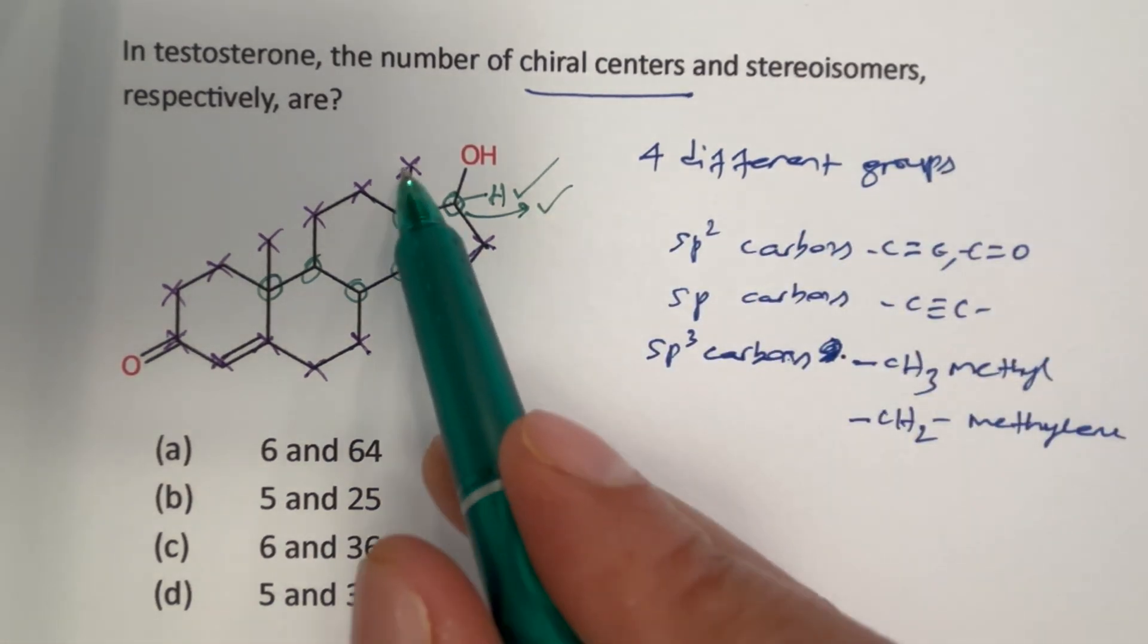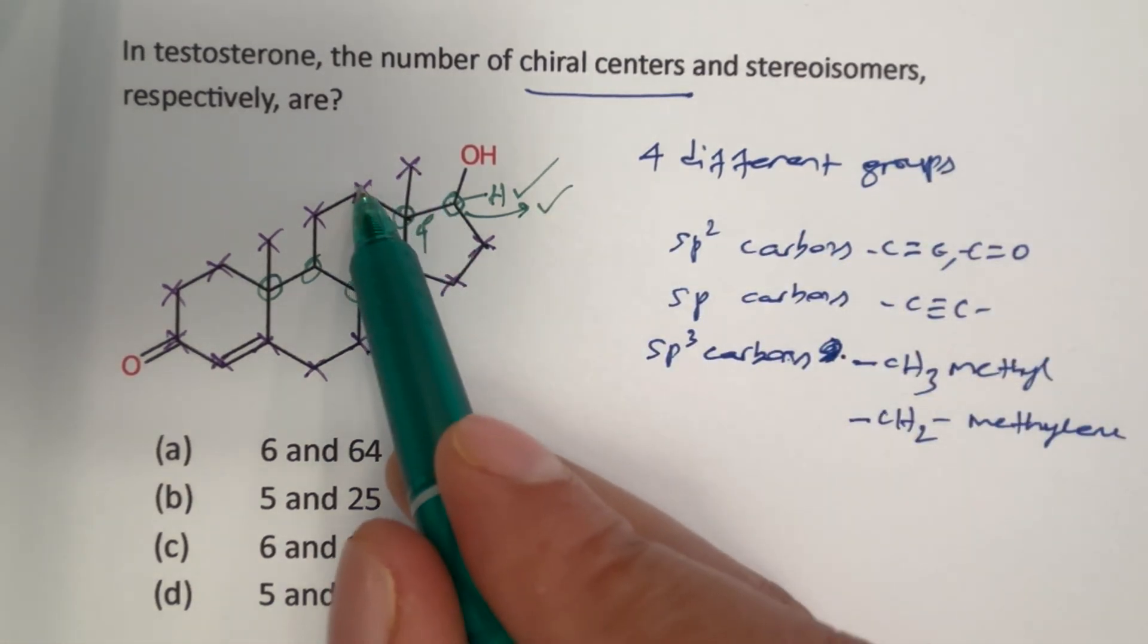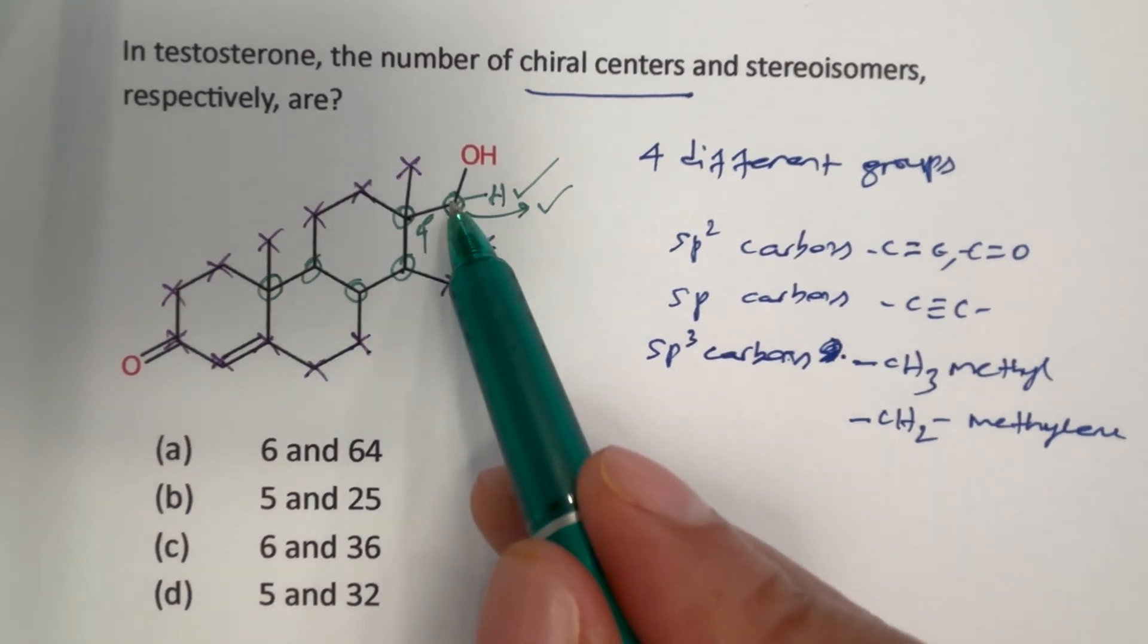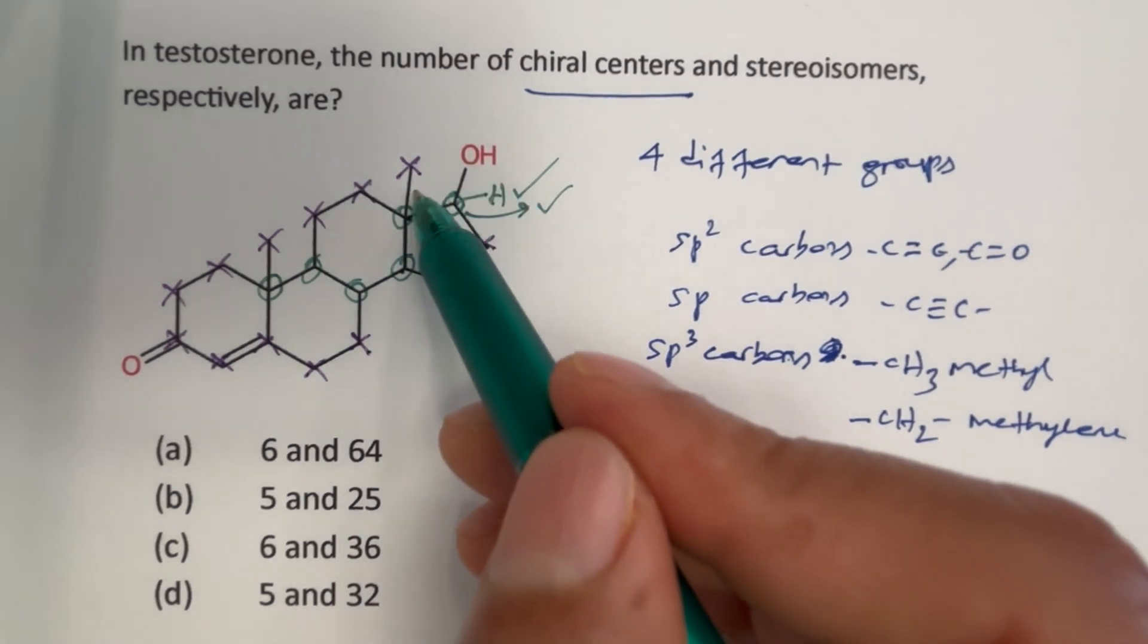How about here? We have methyl group on one side, CH2 here, CH and then CHOH. Therefore this is also chiral.